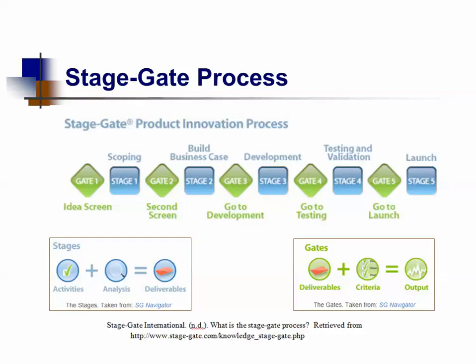In the typical Stage-Gate model, there are five stages. The first is pre-work designed to discover and uncover business opportunities and generate new ideas — this is the idea screen. The next is scoping, which is stage one, and it's a quick preliminary investigation and analysis of the project, essentially inexpensive desk research.